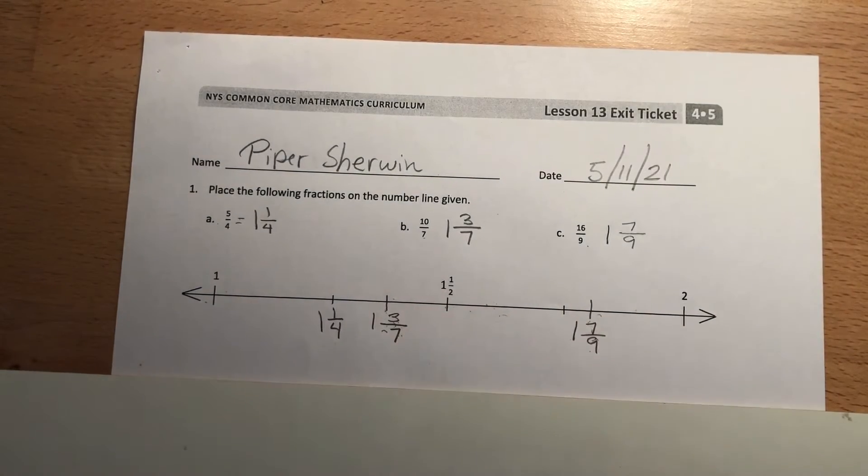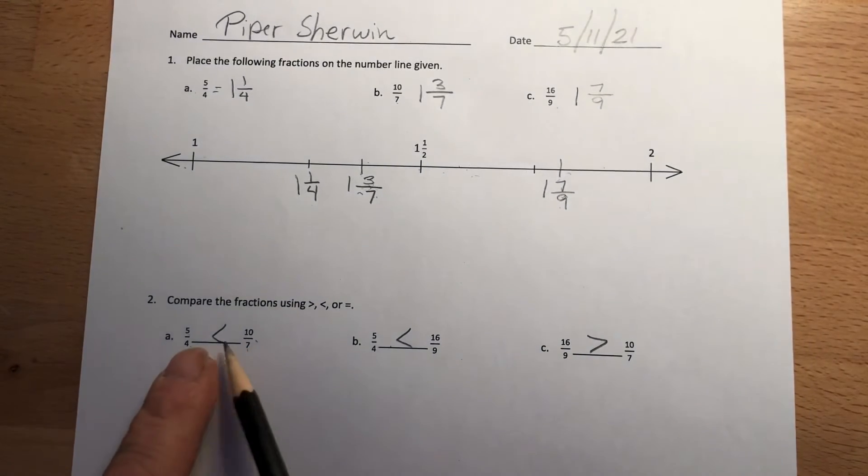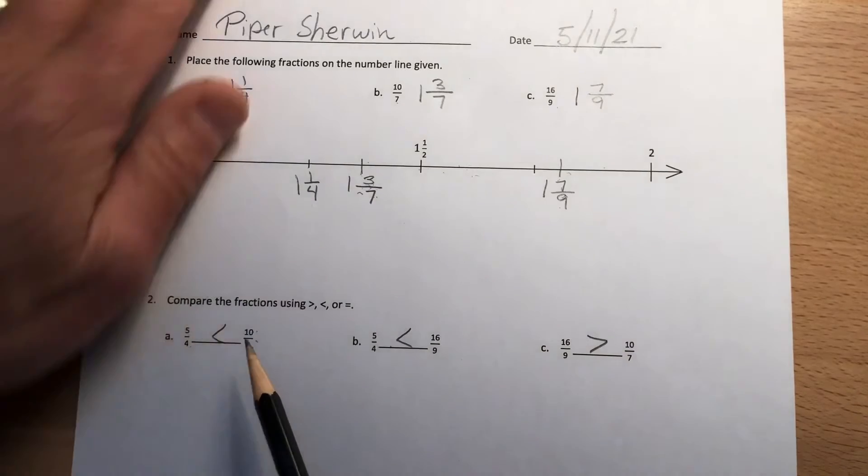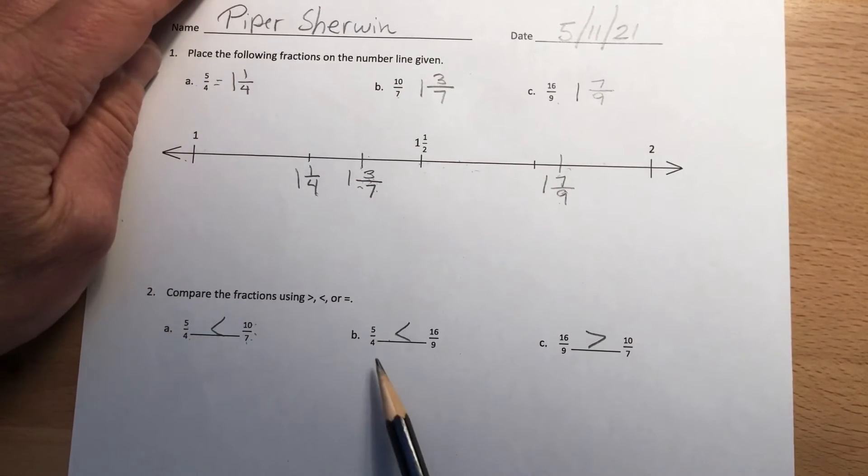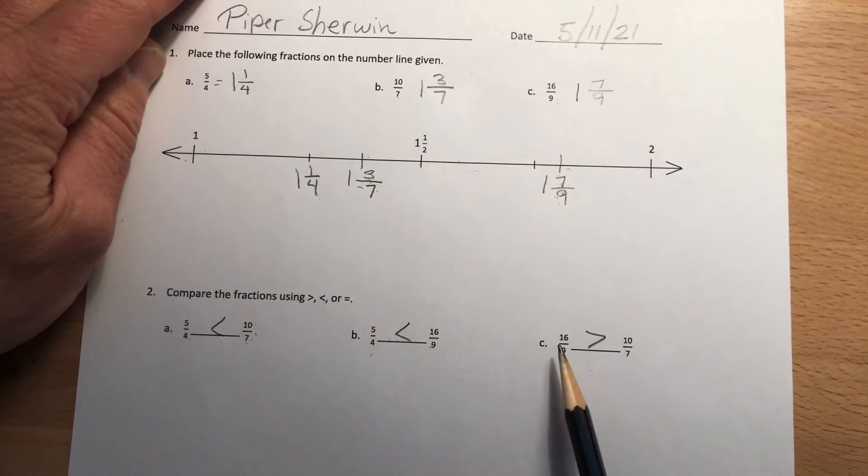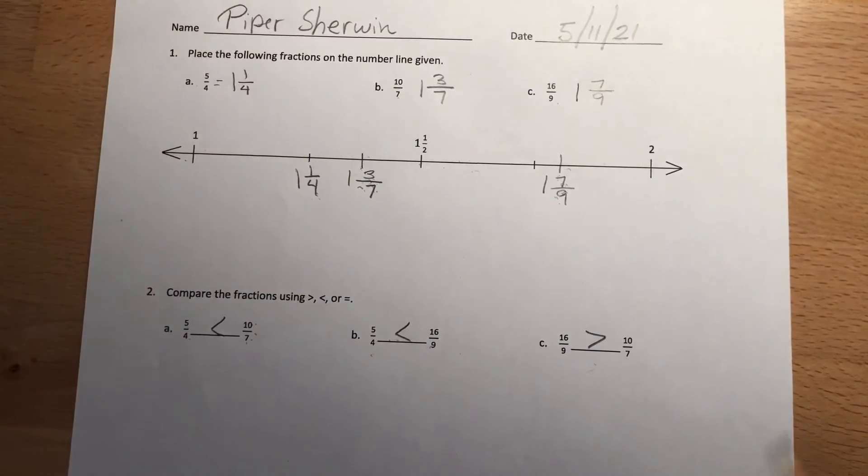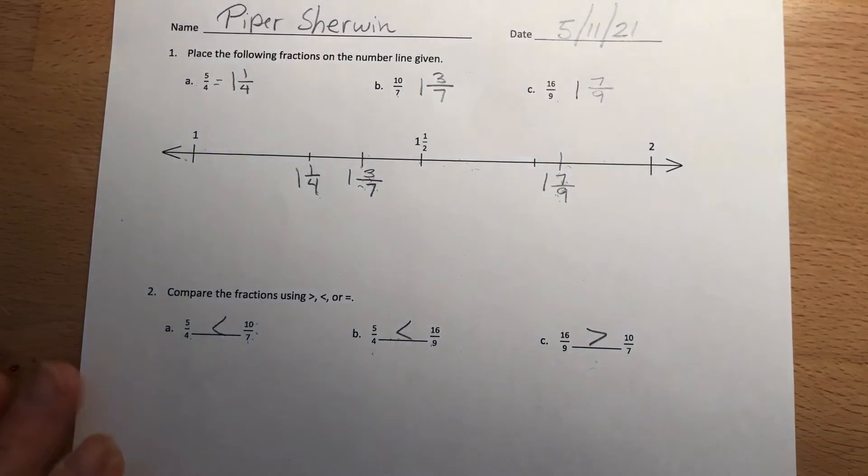Okay, let's compare our fractions just like this. Five fourths is less than seven tenths, I can see that in the number line. Five fourths is less than sixteen ninths, see that in the number line. And then sixteen ninths is greater than ten sevenths. All right, just like that. Hope that worked out well for you. And don't forget, if you need to, you can always cross multiply. I'll just take this one in the middle here.